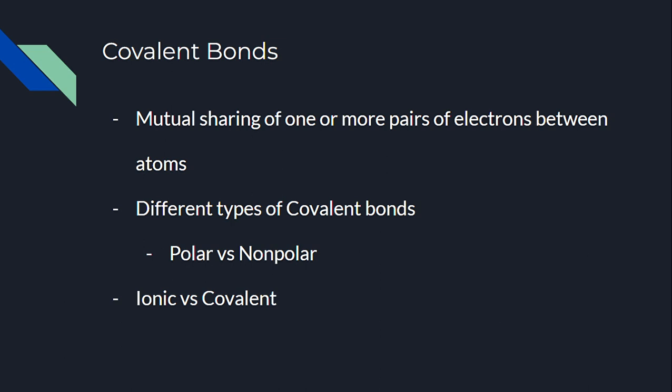A nonpolar covalent bond exists when there are no differences in electronegativities of the molecules, and polar bonds are created when there are greater electronegativities. This is illustrated by the example of oil and water and how they interact with each other on these beaches.